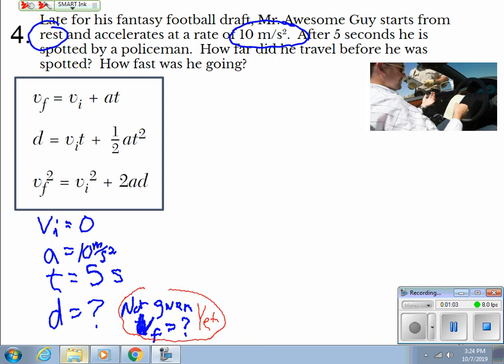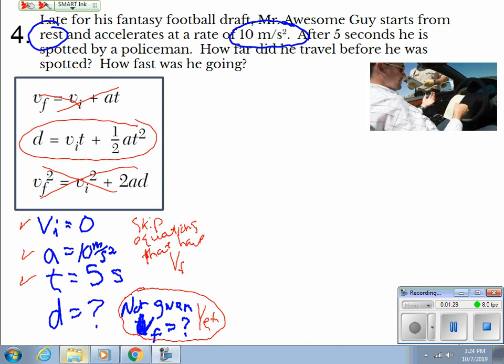So let's figure out which ones we don't want to use. Let's skip equations that have V final in them. So this has V final. That is V final. This is the best one because we have V initial, we have A, and we have T.